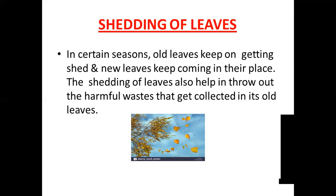When these old leaves become old, the plant sheds them off and new leaves then grow up to take their place. The old leaves keep on getting shed and new leaves keep on coming in their place. The shedding of the leaves also helps in throwing out the harmful waste that gets collected in the old leaves. Along with the old leaves, the harmful waste also will be shedding off from the trees.